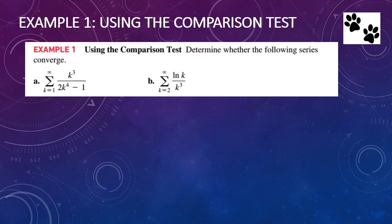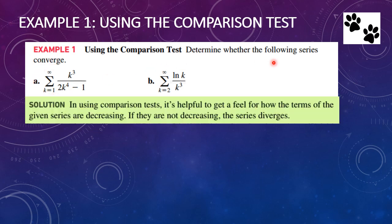Let's look at our first example using the comparison test. Example 1: using the comparison test, determine whether the following series converge. Example a is the series from k equals 1 to infinity of k cubed over 2k to the fourth minus 1, and problem b is the series from k equals 2 to infinity of the natural log of k over k cubed. As we look at both of these series, one of the things we want to do is see how the terms of the series are decreasing, because if the terms keep getting larger and larger, then we have a divergent series.